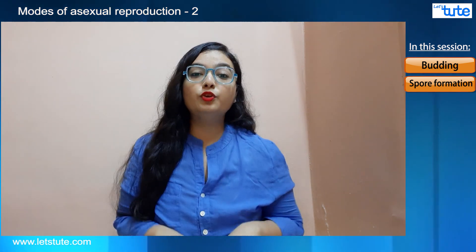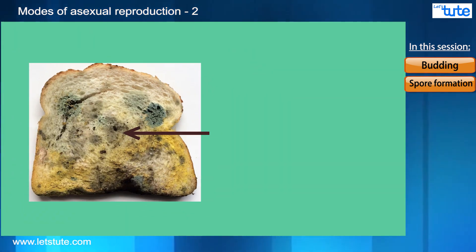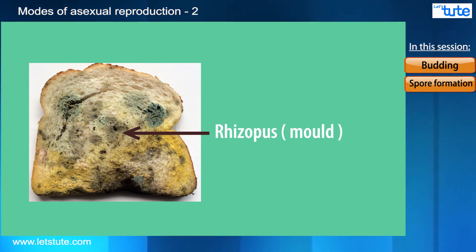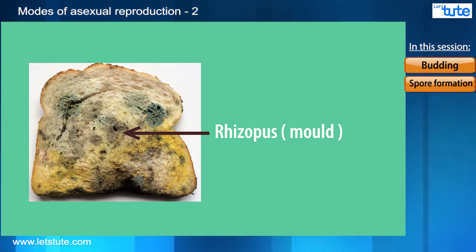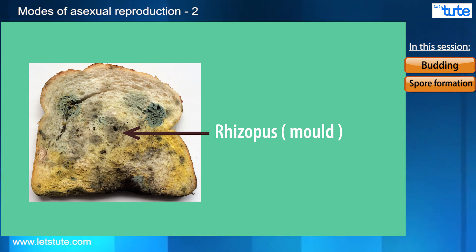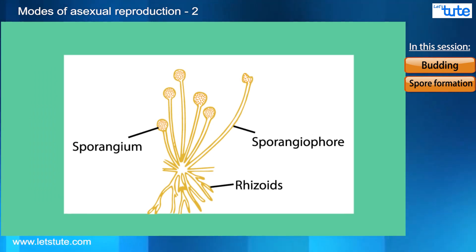That question is going to get answered today. The white cottony-like structures which grow on your spoiled fruits and bread are known as mold or Rhizopus. Rhizopus is an example of an organism which reproduces using spore formation. Spore formation is a method which uses spores to reproduce and to grow.